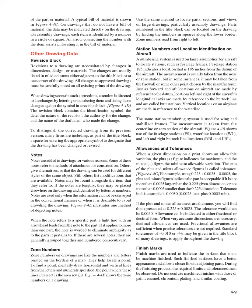Station numbers and location identification: A numbering system is used on large assemblies to locate stations such as fuselage frames. Fuselage station 185 indicates a location 185 inches from the datum of the aircraft, usually measured from the nose or zero station, though it may be taken from the firewall or another manufacturer-chosen point. Locations left and right of the aircraft's longitudinal axis are made by reference to the buttock line, called butt stations. Vertical locations are made in reference to the waterline. The same station numbering system is used for wing and stabilizer frames, measured from the center line or zero station. Abbreviations used include FS (fuselage station), WL (waterline), RBL, and LBL (right and left buttock line).